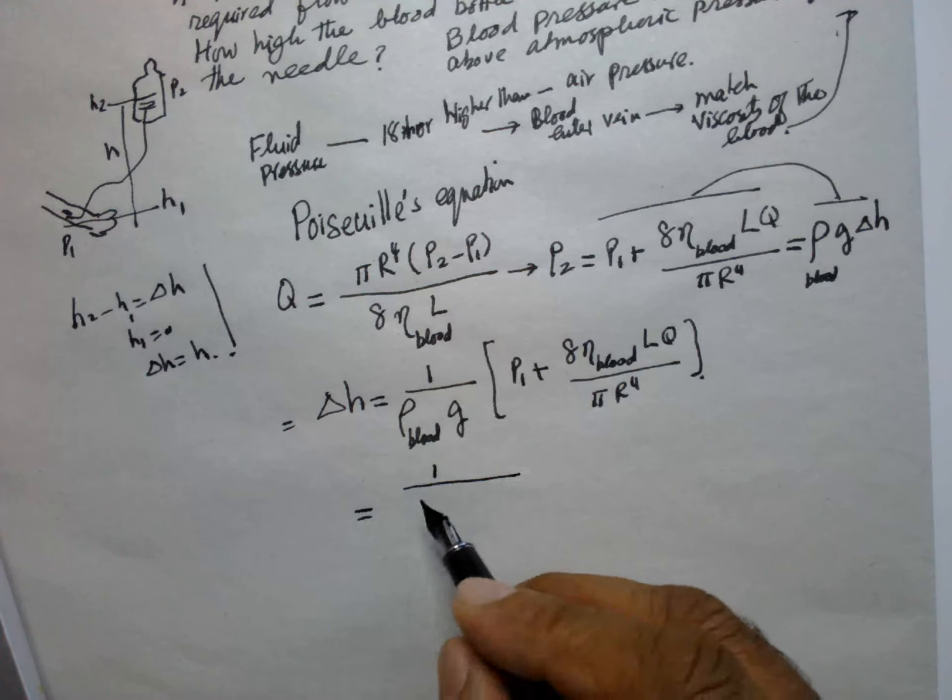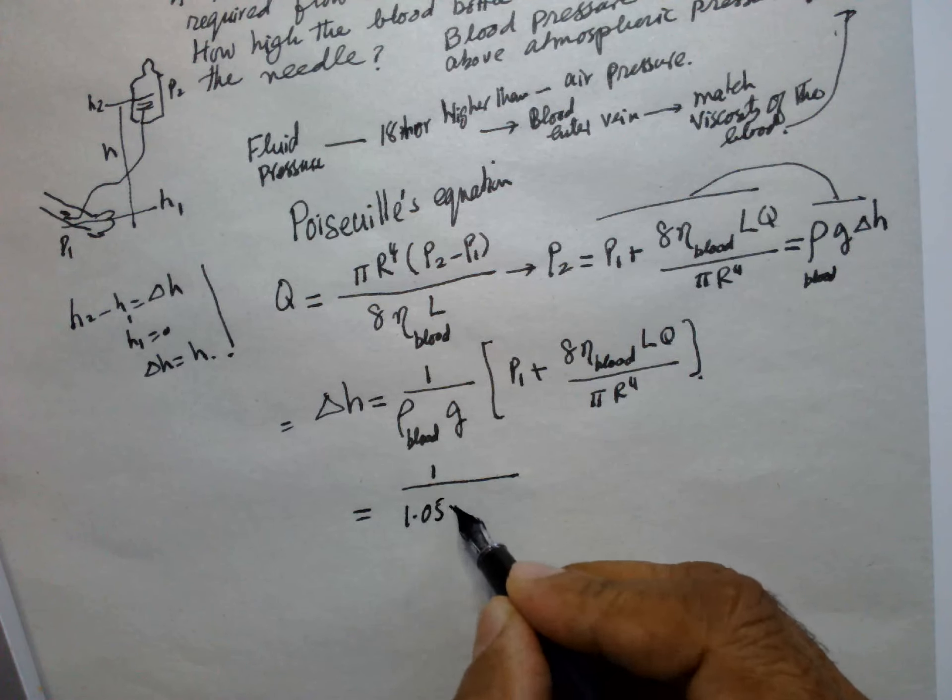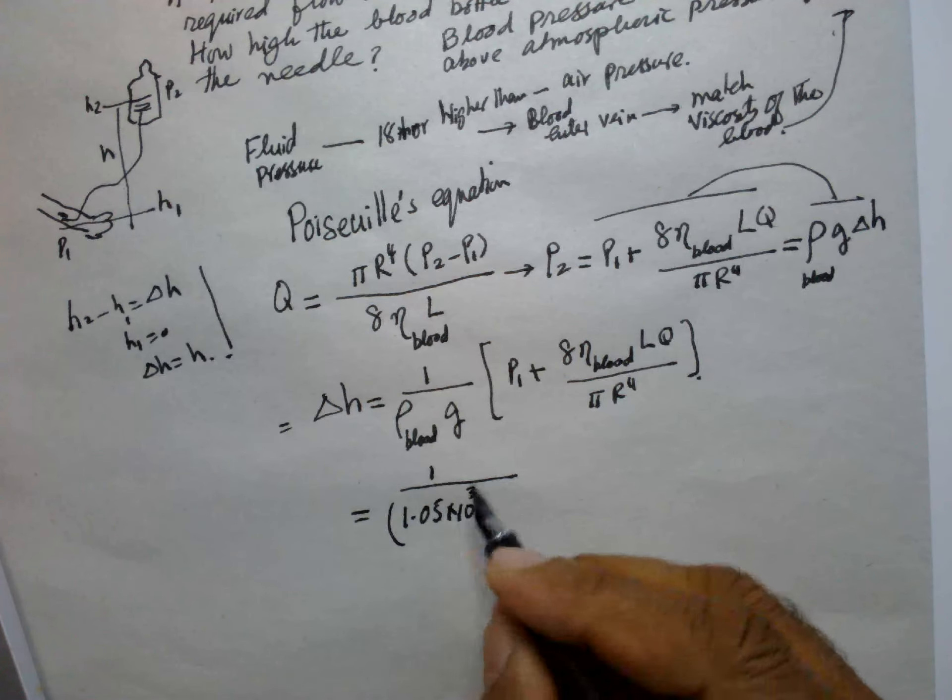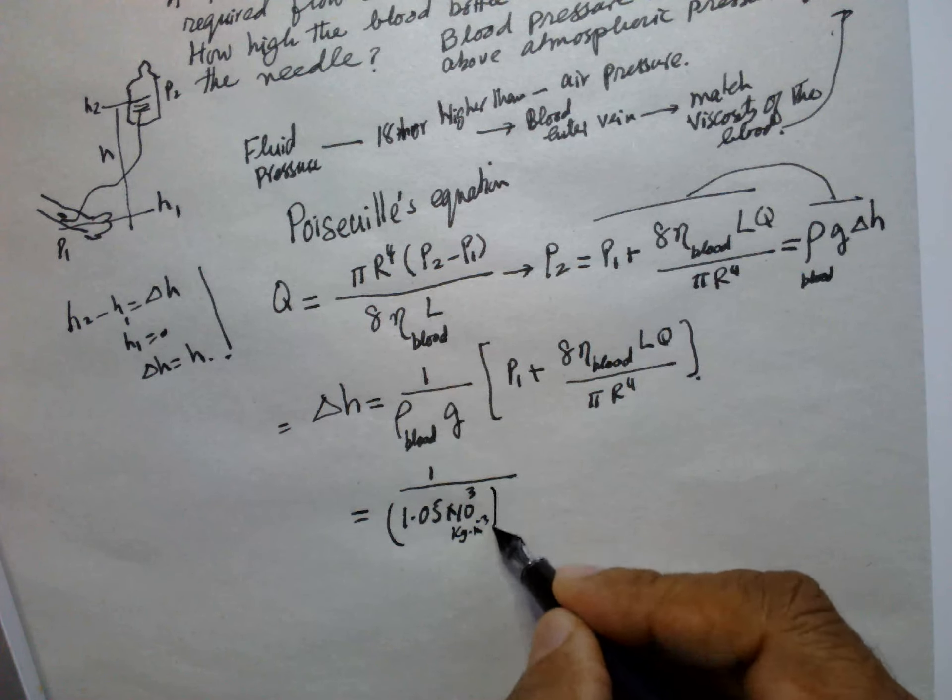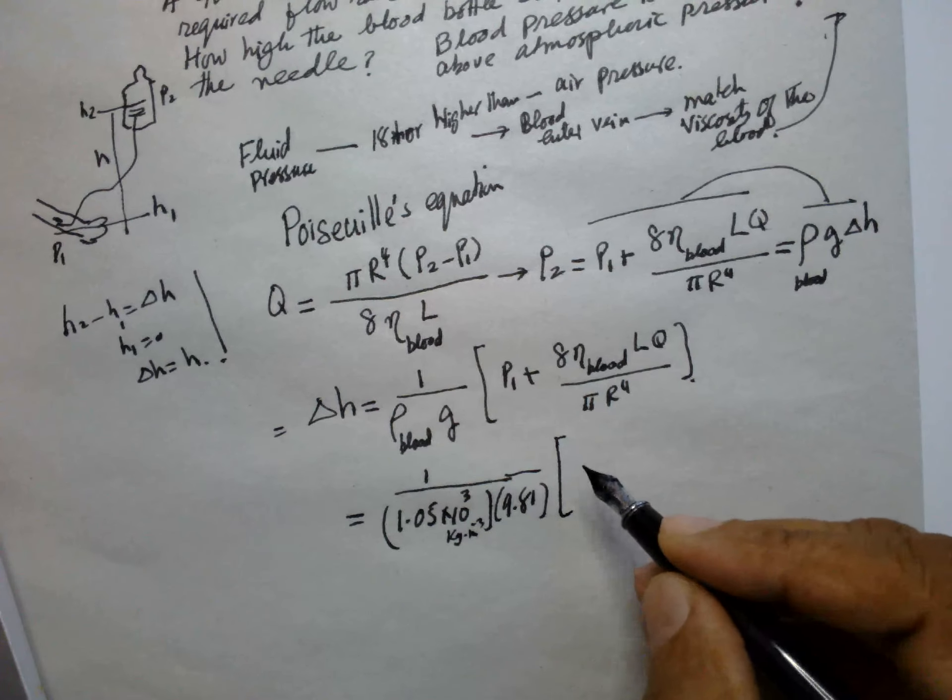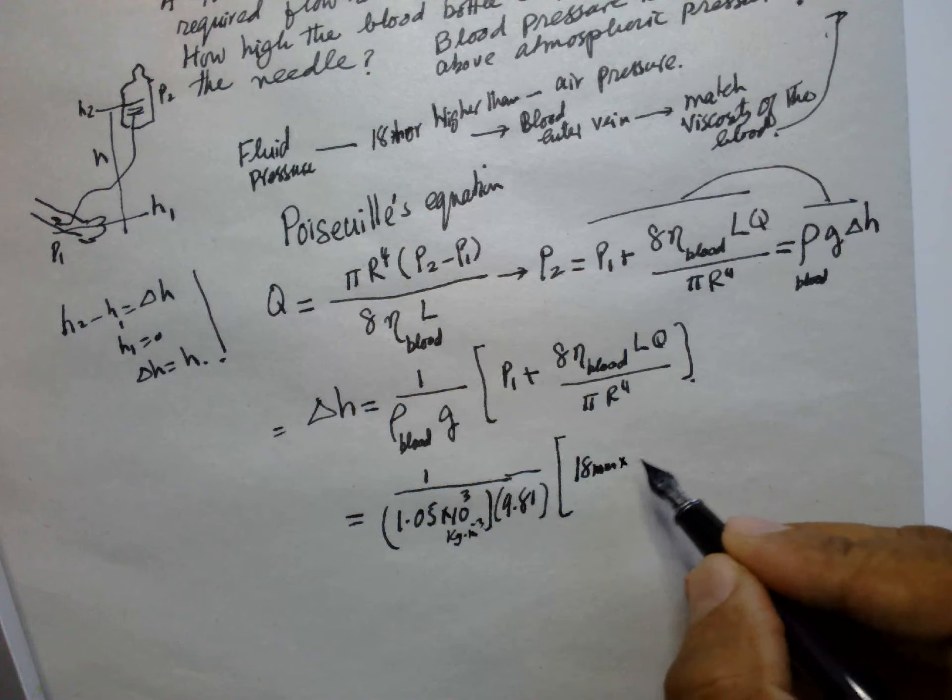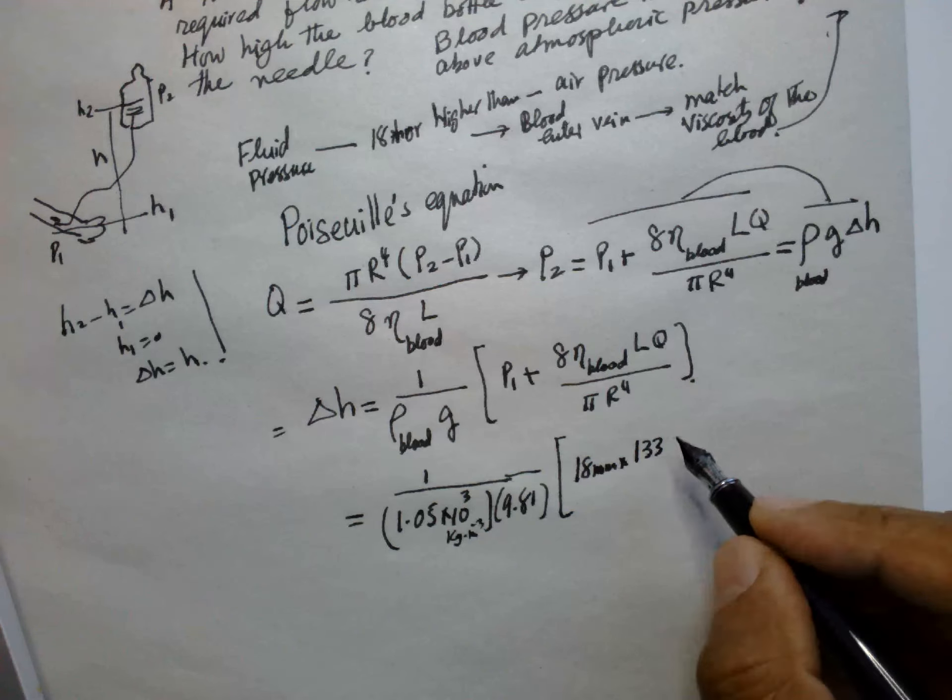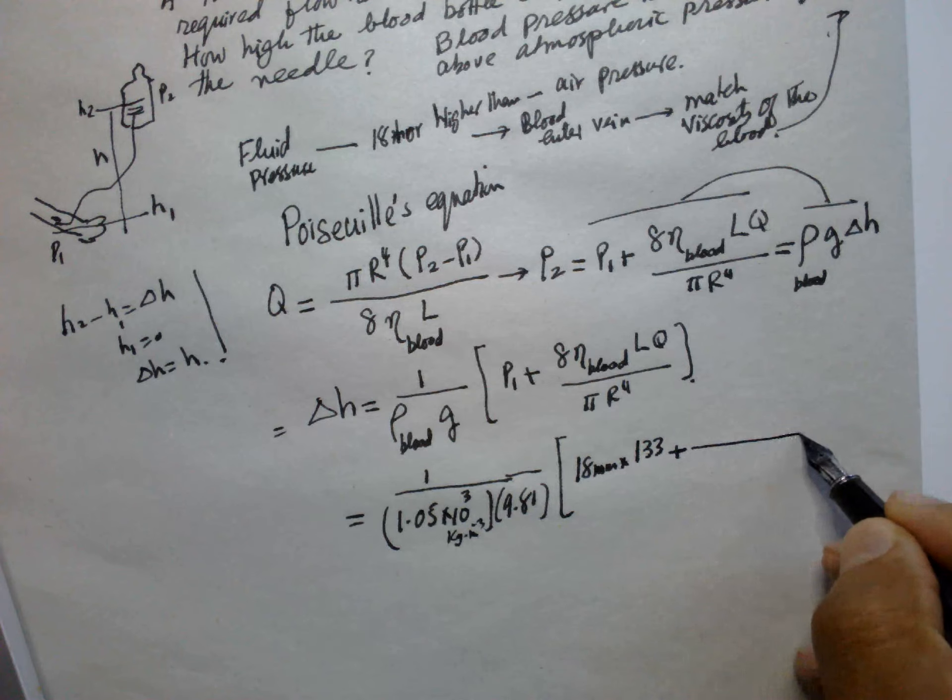So now we substitute the values. It is equal to 1 over the density of the blood which is 1.05 × 10³ kg/m³, multiplied by 9.81 for g, plus the pressure is 18 torr. So we have to multiply by 133 Newton per meter squared